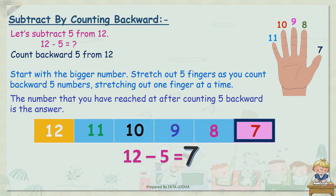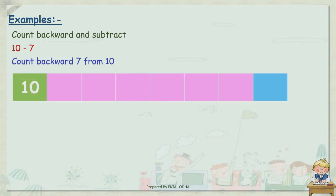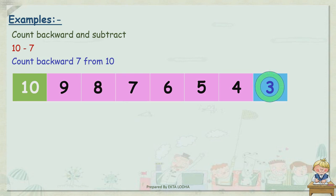Let's take a few more examples. Count backward and subtract: 10 minus 7. Count backward 7 from 10. Which number is greater? That is 10. Which number comes before 10? 9. Before 9, it's 8. Then 7, 6, 5, 4, and 3. So our last number is 3. Thus, 10 minus 7 is equal to 3. So 3 is our answer.